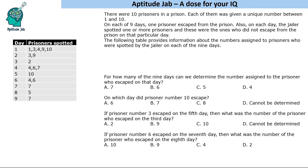On each of 9 days, one prisoner escaped from the prison. Also on each day, the jailer spotted one or more prisoners — these were the ones who did not escape on that particular day. The following table provides information about the numbers assigned to prisoners who were spotted by the jailer on each of the 9 days.